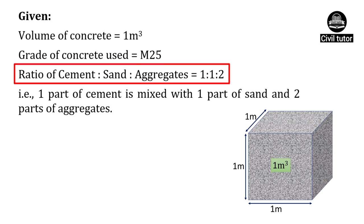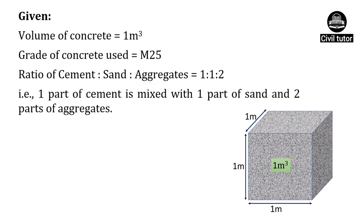The ratio of M25 grade of concrete is 1:1:2. That is, one part of cement is mixed with one part of sand and two parts of aggregates. For 1 meter cube of concrete work, wet volume will be equal to 1 meter cube.